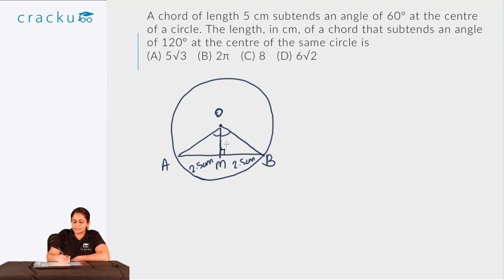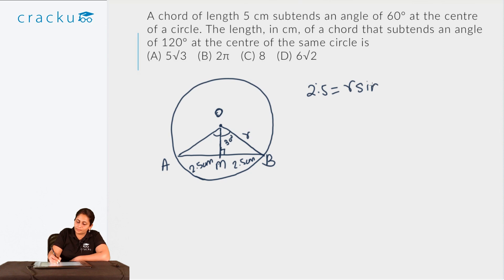Since the half-angle is 30° and AM = 2.5 cm, we have: AM = R × sin(30°), so 2.5 = R × ½, giving R = 5 cm. The radius of the circle is 5 cm.